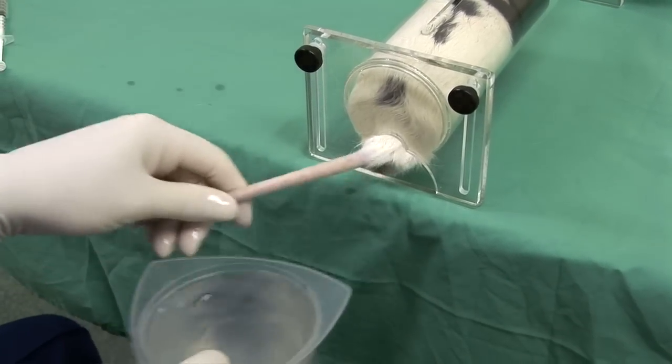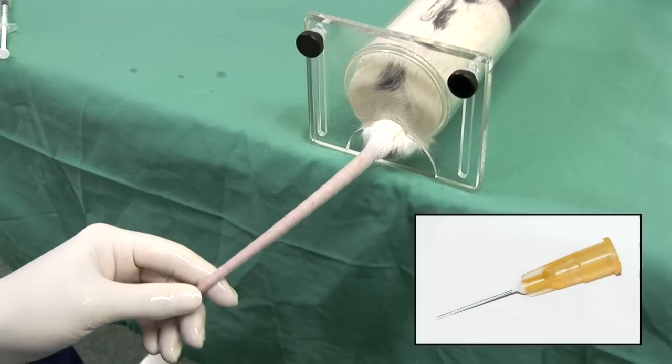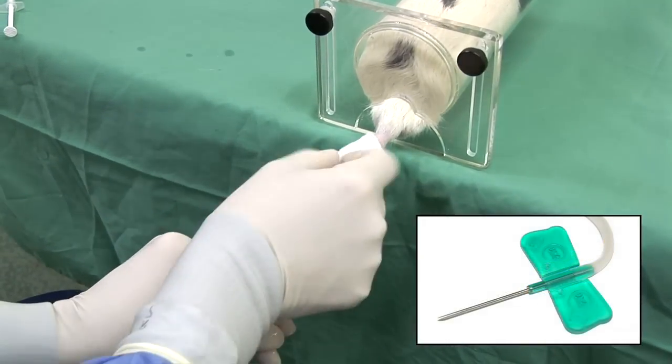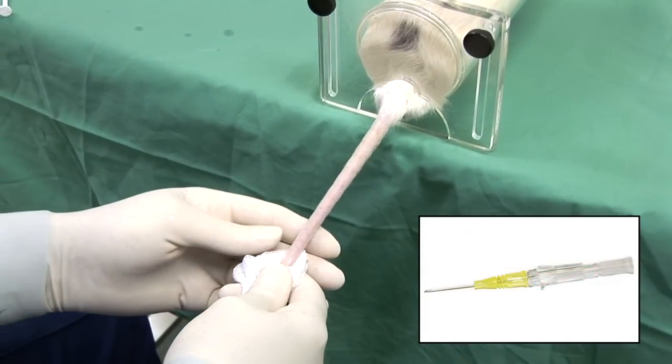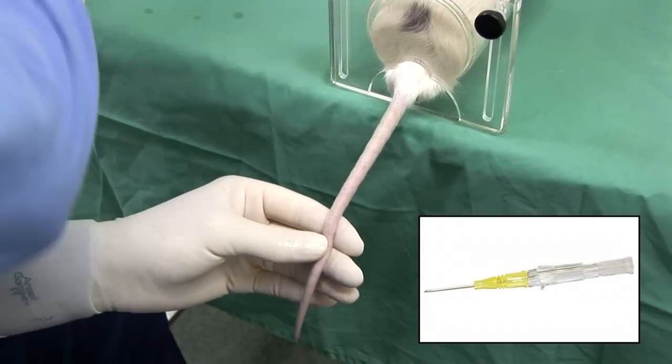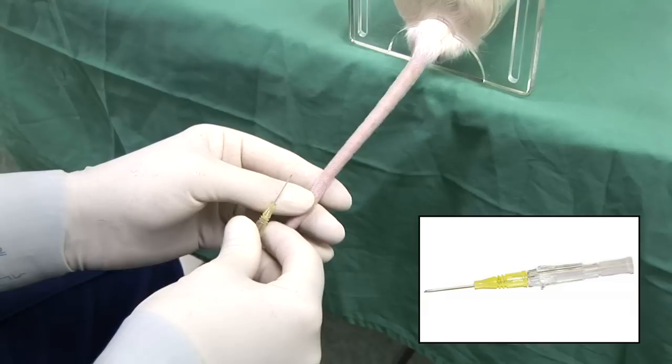Intravenous injection can be made either with an appropriate sized needle, a butterfly style infusion set, or for greatest assurance that all the material is delivered into the vein using an over the needle catheter.